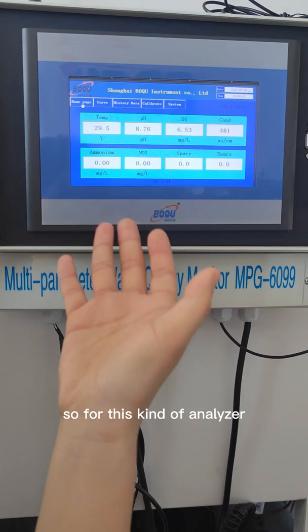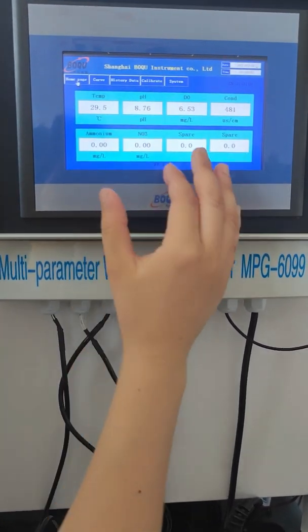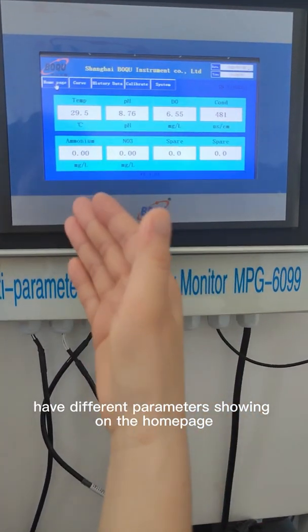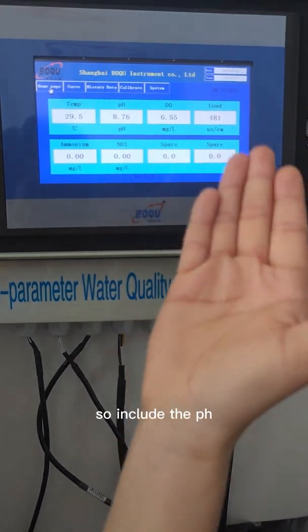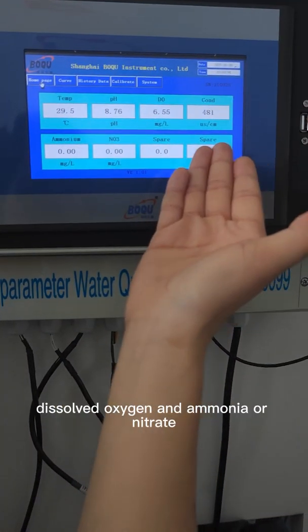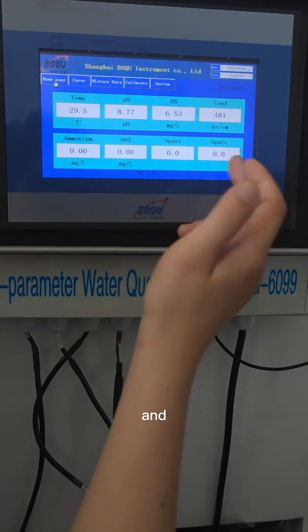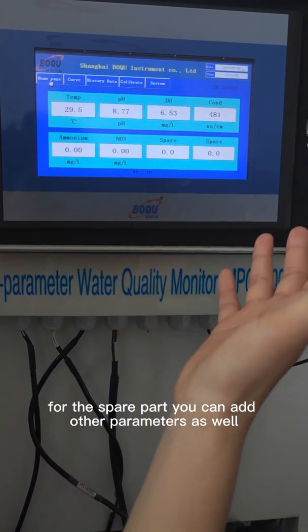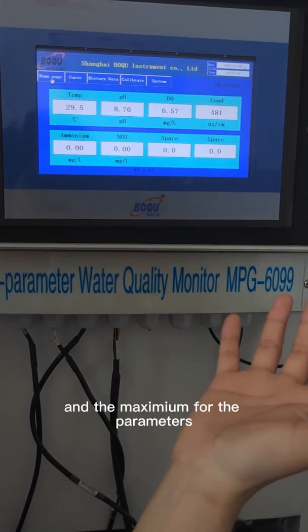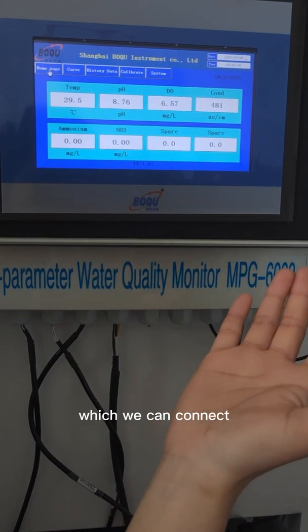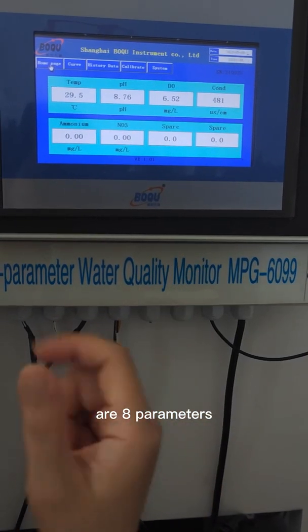For this kind of analyzer you can see we have different parameters showing on the home page. This includes pH, dissolved oxygen, ammonia, and nitrate, and for the spare part you can add other parameters as well. The maximum parameters we can connect is eight.